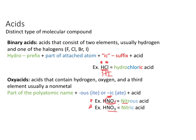Then we either add an '-ous' or '-ic' ending depending on what kind of polyatomic we have. If our polyatomic ends in '-ite,' we put the '-ous' ending; if it ends in '-ate,' we use the '-ic' ending. So HNO2 corresponds to nitrite, giving us the '-ous' ending — nitrous acid. And HNO3 corresponds to nitrate, giving the acid the '-ic' ending — nitric acid.